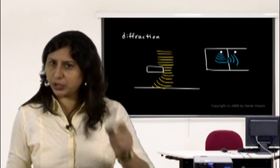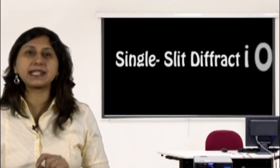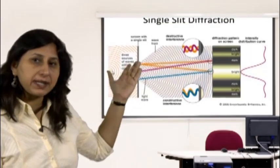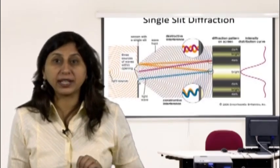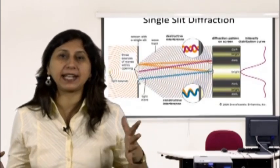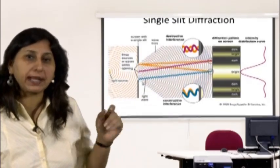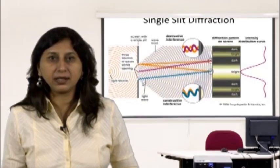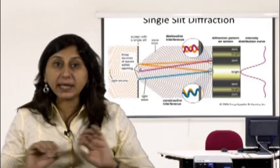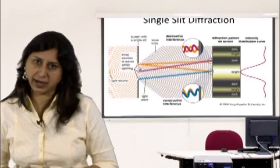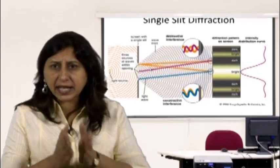Single slit diffraction: the setup is the same as the double slit experiment but with just one slit. There are many different paths that light can take to point P from any point in the slit, so the diffraction pattern is caused by the superposition of an infinite number of waves. Paths from the two edges of the slit have the biggest difference in phase, producing constructive interference — bright areas — and destructive interference — dark areas.